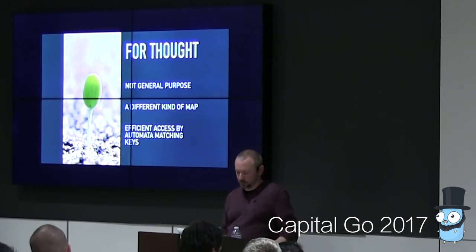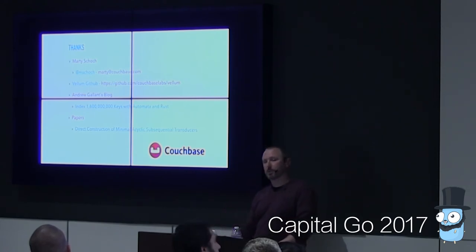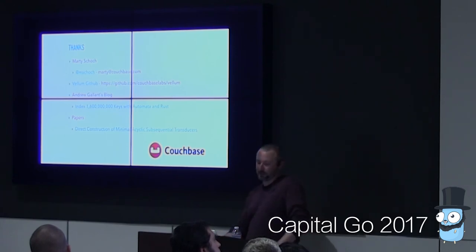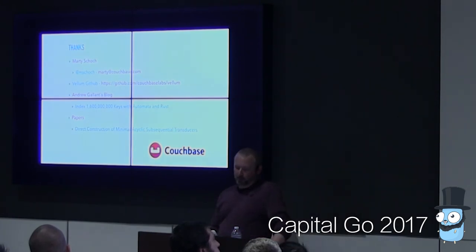I want to call out Andrew Gallant's blog post, 'Index 1.6 Billion Keys with Automata and Rust' — without that blog post, the Vellum library wouldn't exist and I wouldn't be here talking about it. And if you're inclined to read the mathematical formalism, the paper to start with is 'Direct Construction of Minimal Acyclic Subsequential Transducers.' Thank you all for your time.